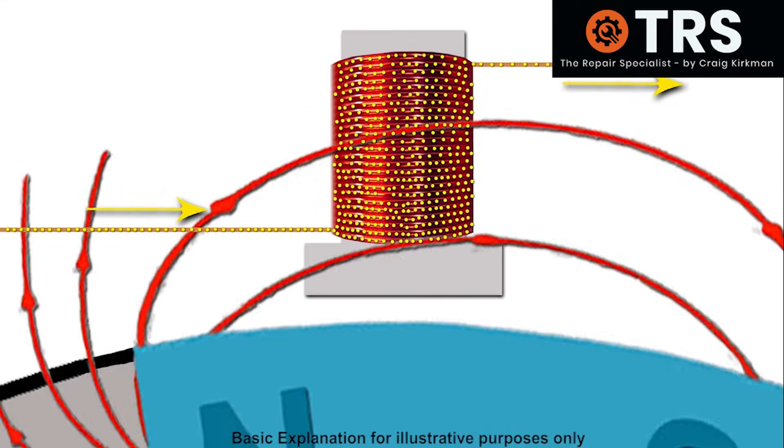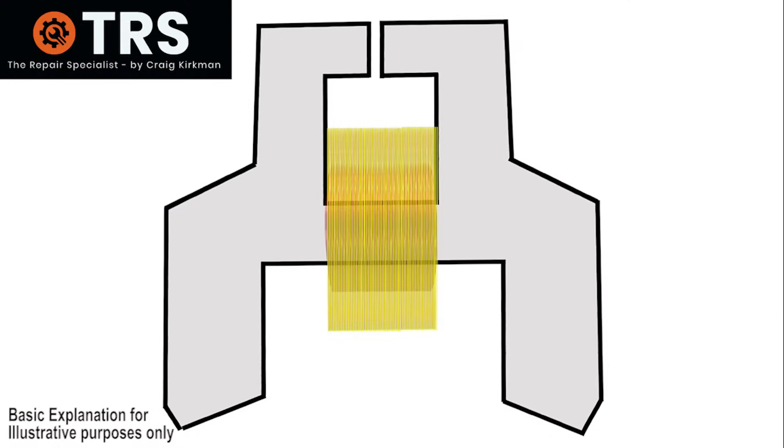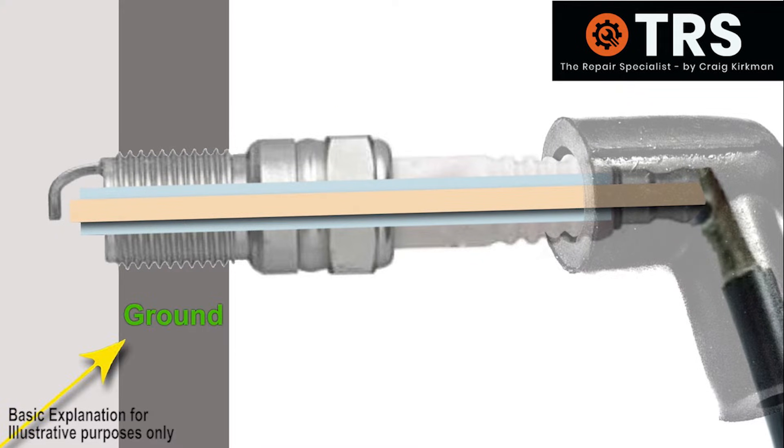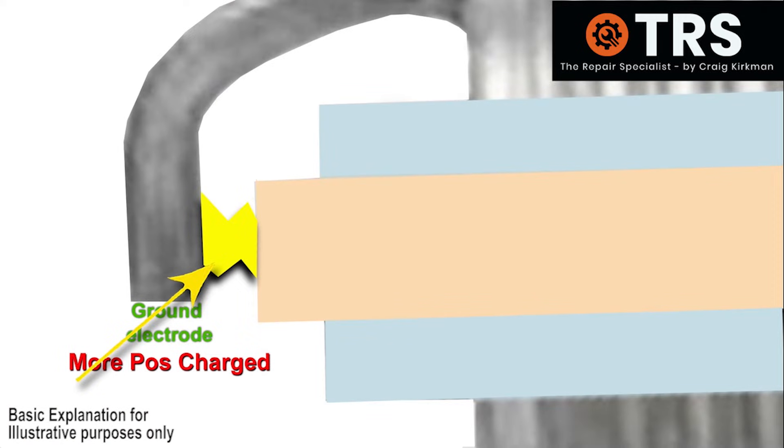This electrical current needed to go to ground, and so the attraction for these negatively charged electrons is to flow out of the coil through the HT lead which is connected to it, and over to the spark plug to find the ground of the engine. In doing so, it creates the spark.